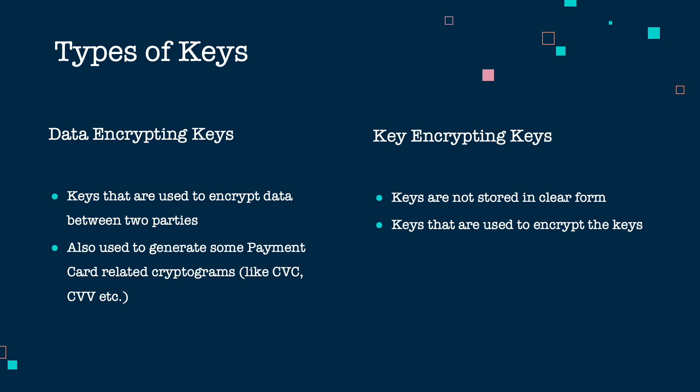Key encrypting keys are keys used to encrypt other keys for storage. When we have a key like a CVC key or a PIN key, we do not store it in clear in the key database. We store it encrypted under a different key. Those keys used to encrypt other keys are called key encrypting keys.